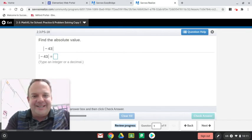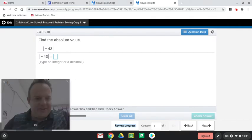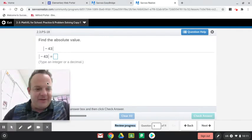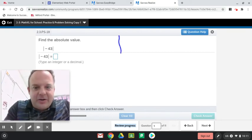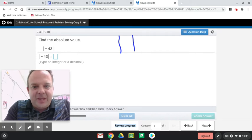Now, absolute value means the distance from zero, and you're going to notice these signs here. You see those two parallel lines on the negative 43? Those are what I'm talking about. So, let me show you. You'll have two parallel lines. My line got a little shaky there.